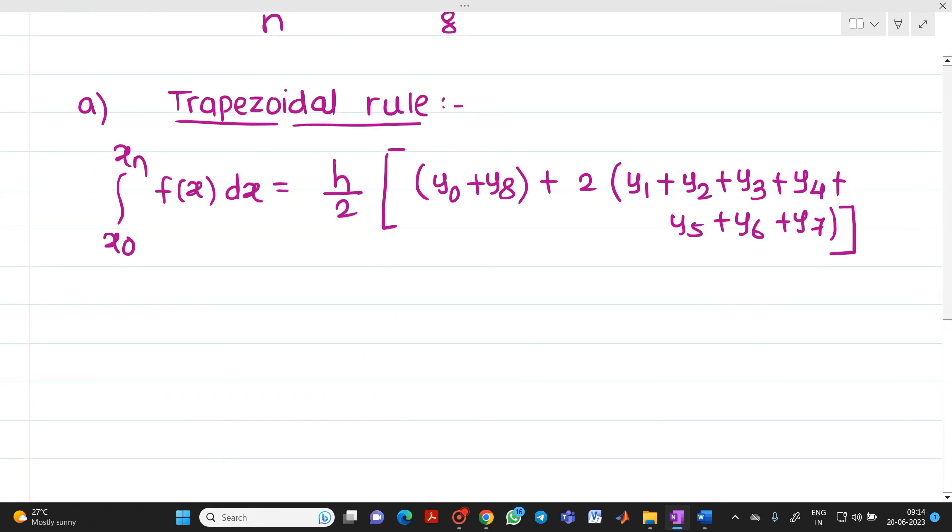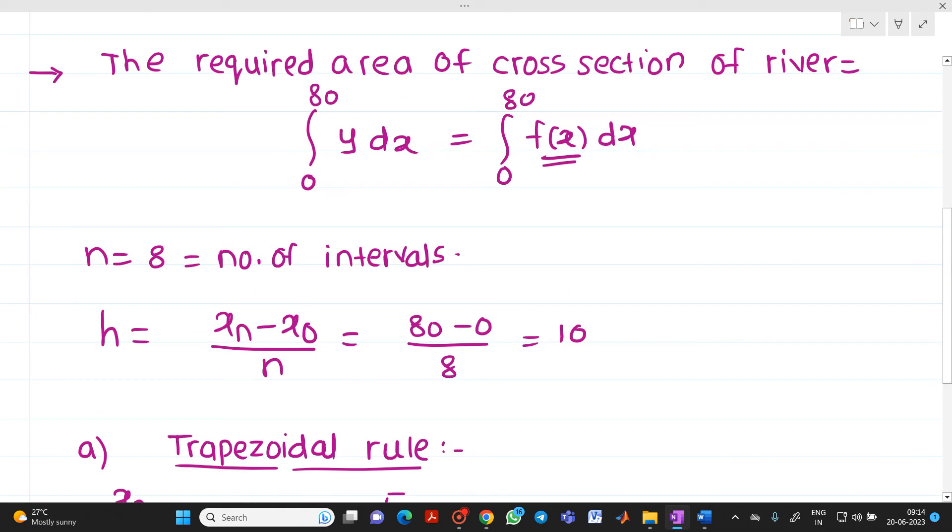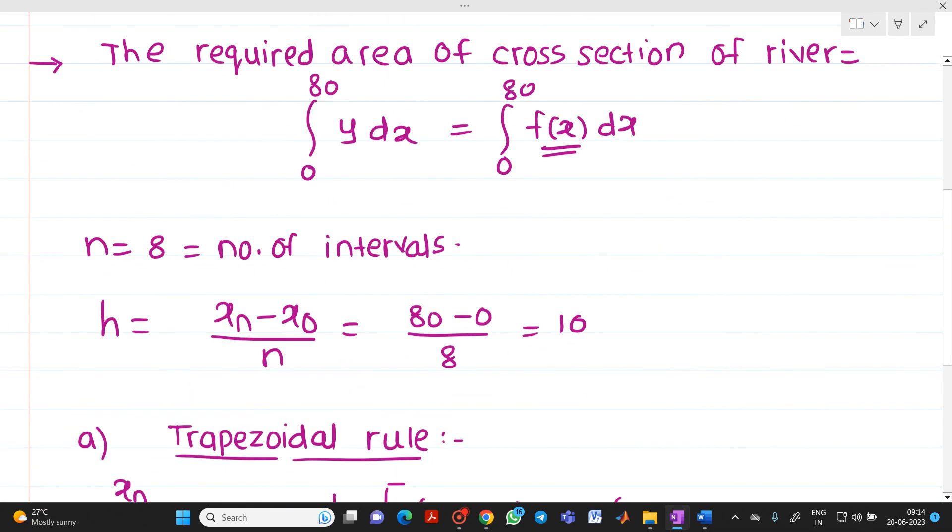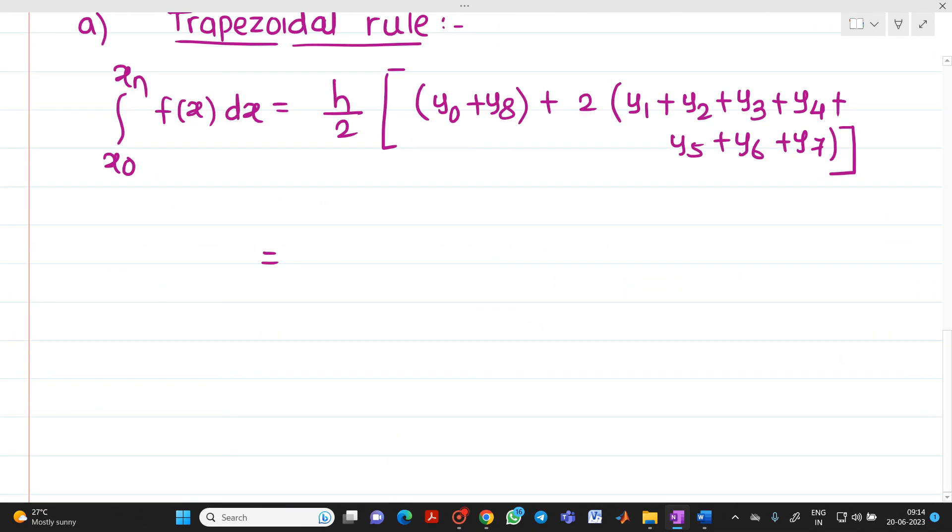Now if you substitute all the values, you know h equals 10, and you know the values of y0 to y8. You can substitute in the given formula. I am going to write the answer directly. We will get the answer as 705 meters square. This will be your answer by using trapezoidal rule.